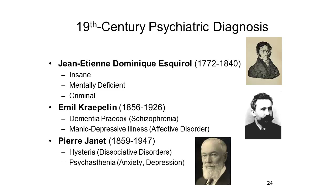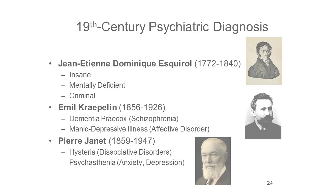A little bit later in the 19th century, Pierre Janet, a French psychiatrist, did the same thing for the neuroses, distinguishing between hysteria and psychasthenia. Hysteria essentially being the dissociative, conversion, and somatoform disorders as I described them earlier, and psychasthenia being the rest of the neuroses, where anxiety and depression dominate.